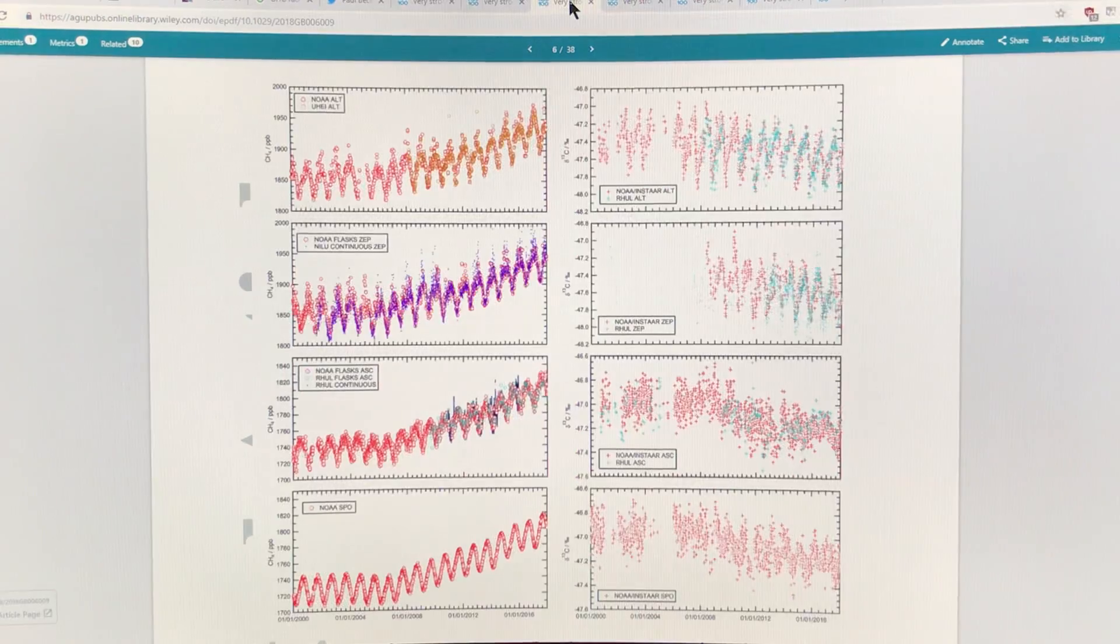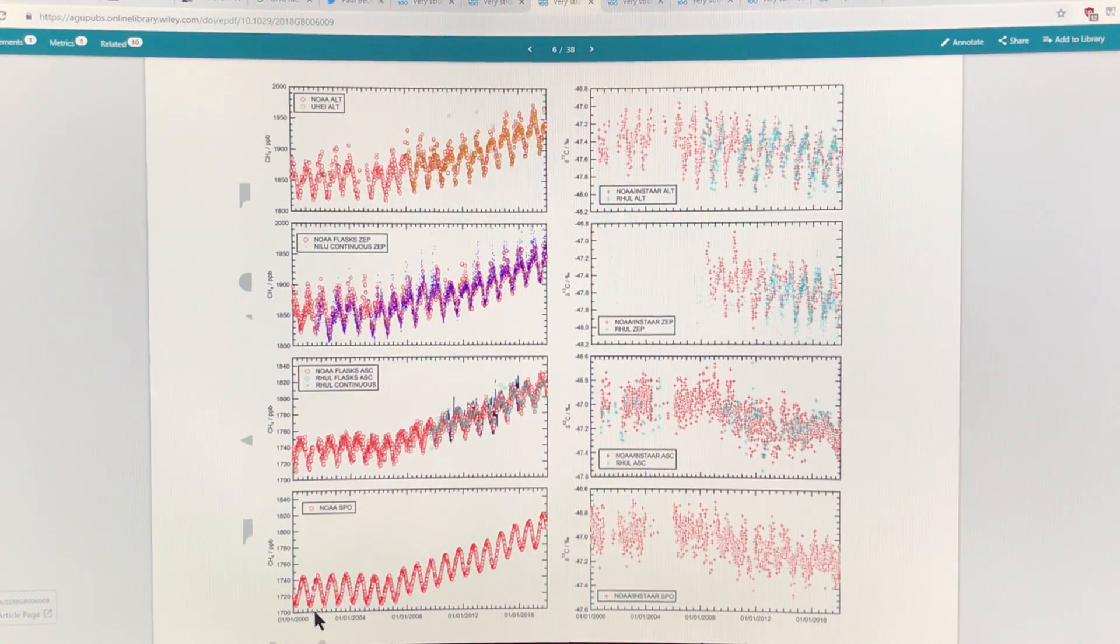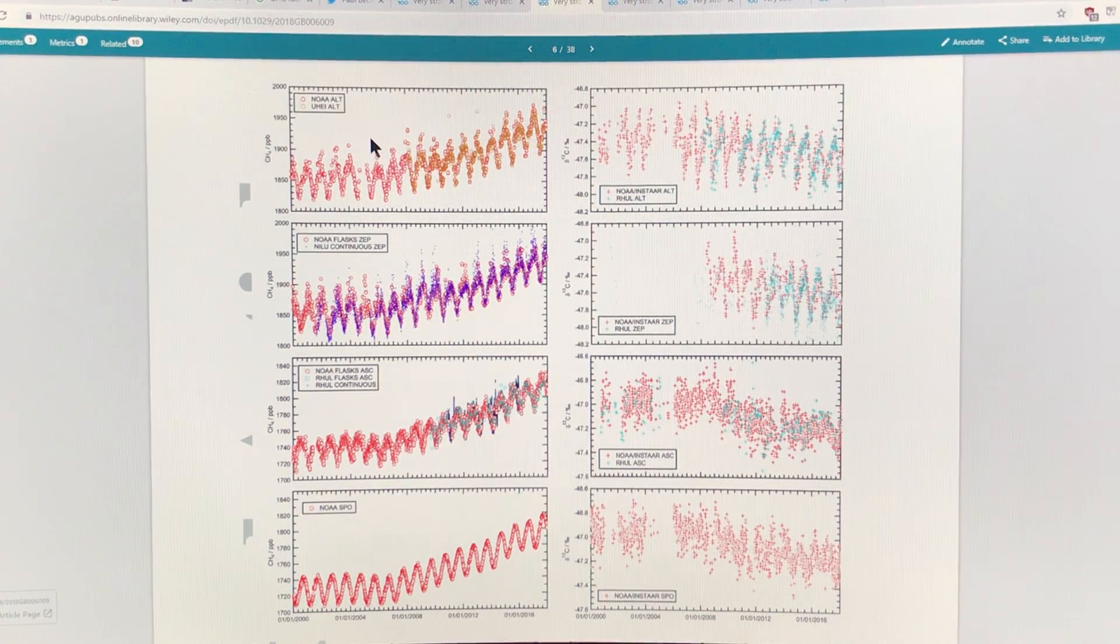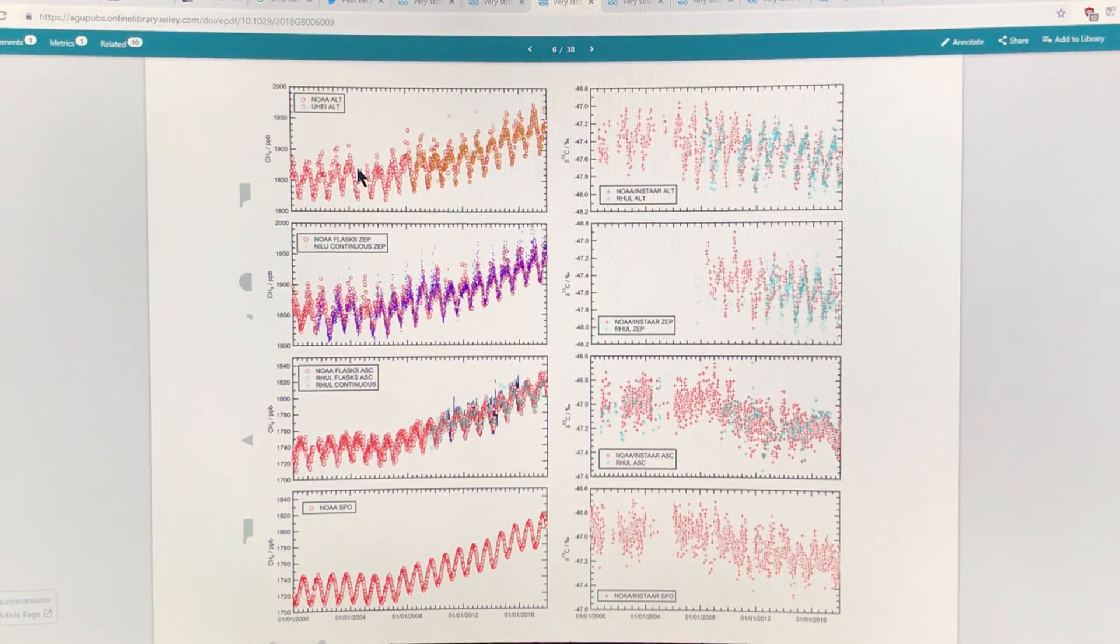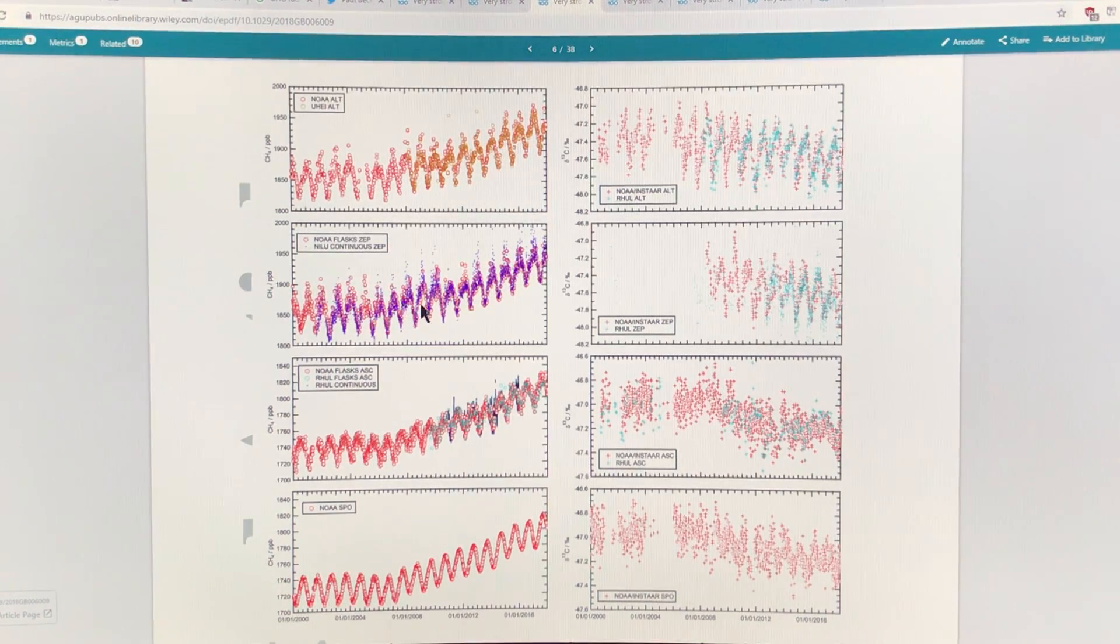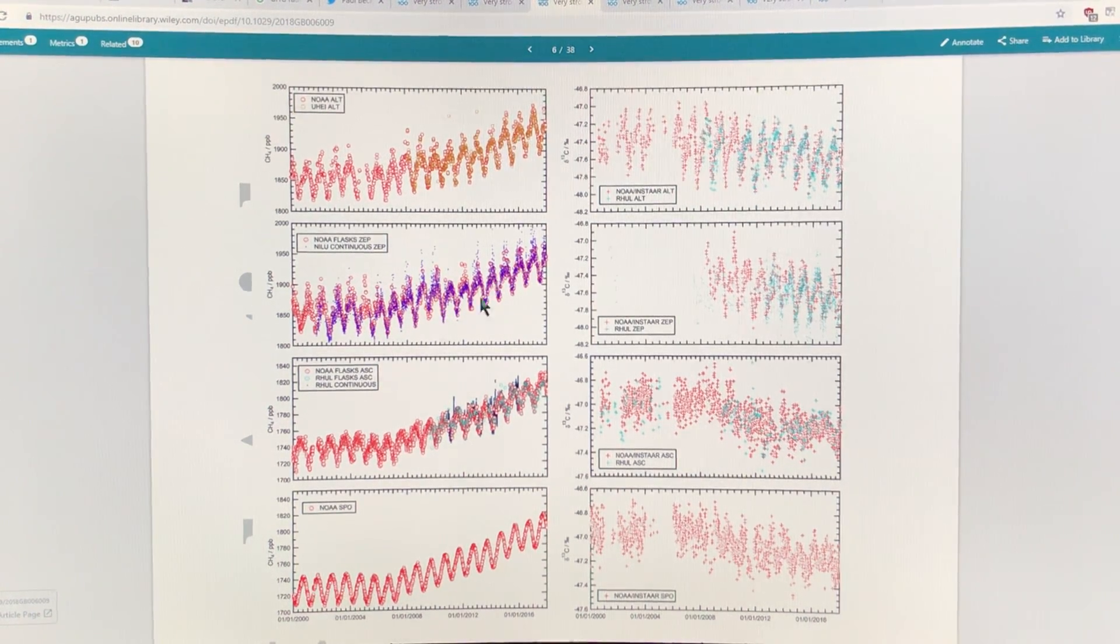Let's look at the dependence with latitude. What we have here is the concentration of methane in parts per billion, the rise from 2000 to almost present day. This is Alert, a station at 82 degrees north latitude. This is Zeppelin on Svalbard at 79 degrees north. This is the Ascension Islands at 6 degrees south latitude, and this is at the South Pole minus 90 degrees latitude. You can see strong rises in each case.